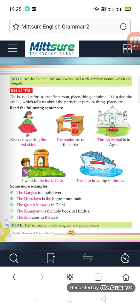Now let us talk about the use of THE. THE is used before a specific person, place, thing, or animal — meaning only one particular person, one particular place, one particular thing, or one particular animal. It is a definite article which tells us about a particular person, thing, or place.